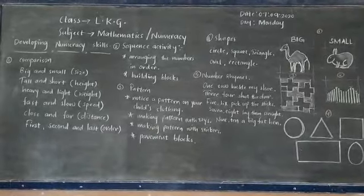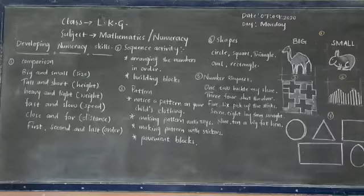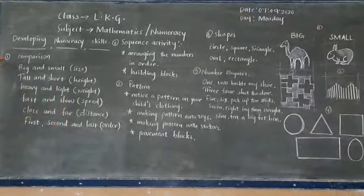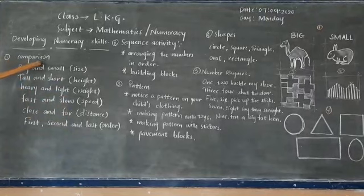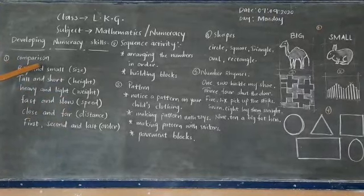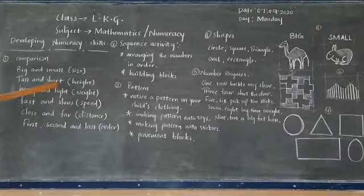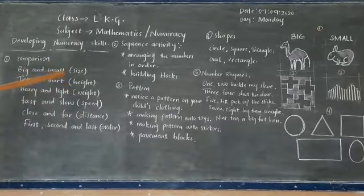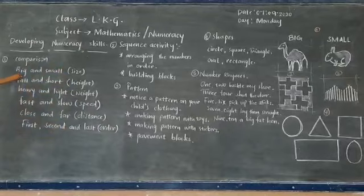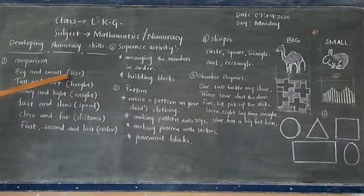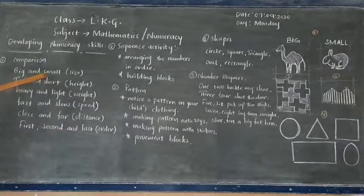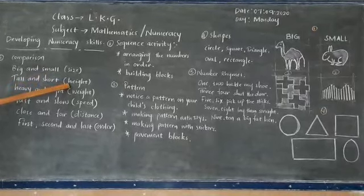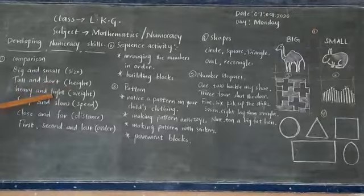Here, we have various developing methods of numeracy skills among the kids. Coming to the first segment, that is comparison. Comparison gives an idea of comparing things like different size, height, weight and other concepts. Big and small will give the sense of size among the students. Tall and short will create the sense of height in the kids. Heavy and light, the sense of weight.